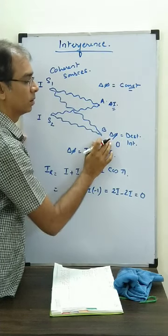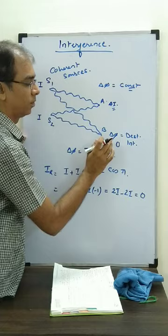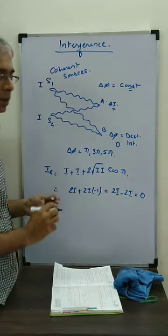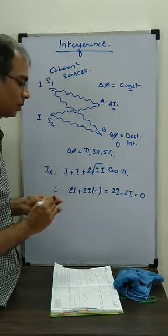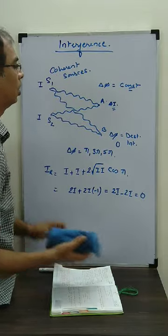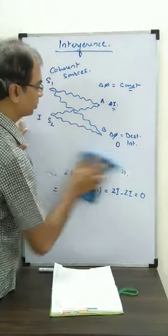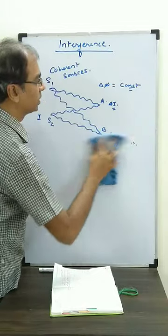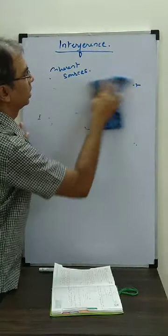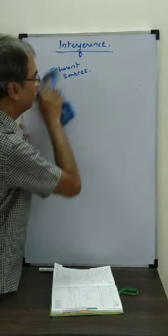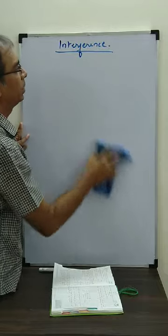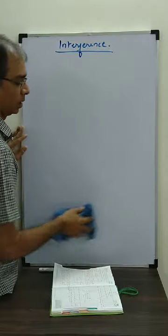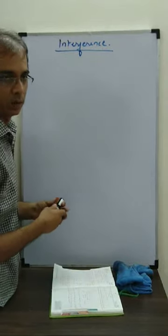Will it be there forever? Answer is yes, because the sources are coherent. But if suppose we are having non-coherent sources, non-coherent sources means their frequency is not same, it keeps on changing. Then what happens? And what will be the average intensity at a meeting point? That is what we are going to discuss right now.